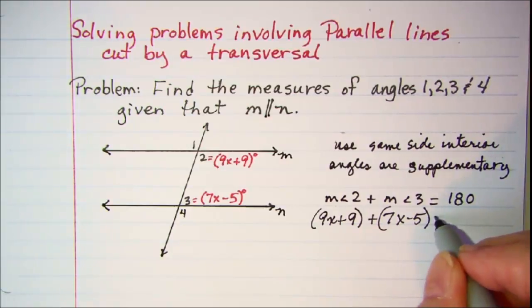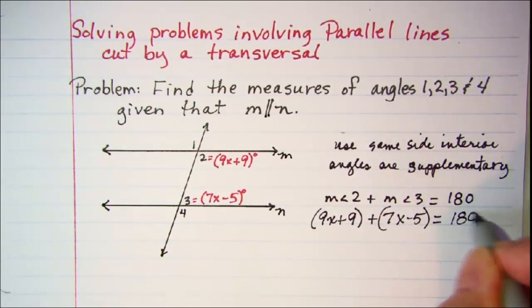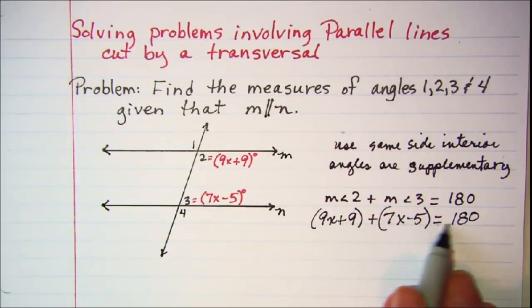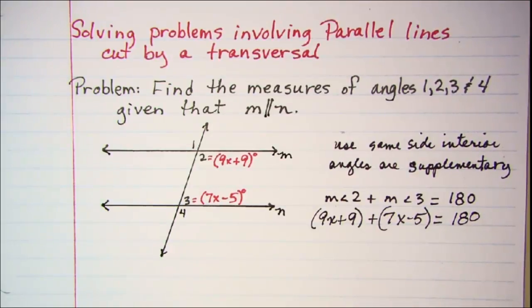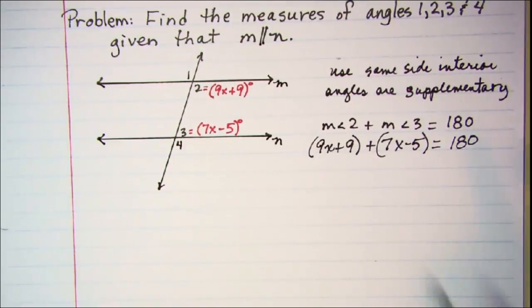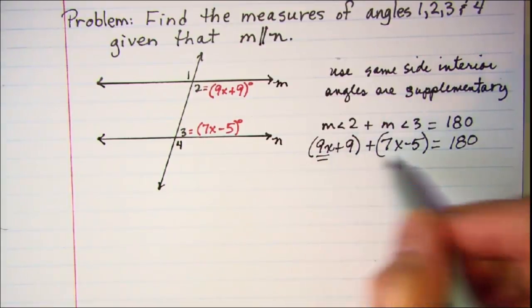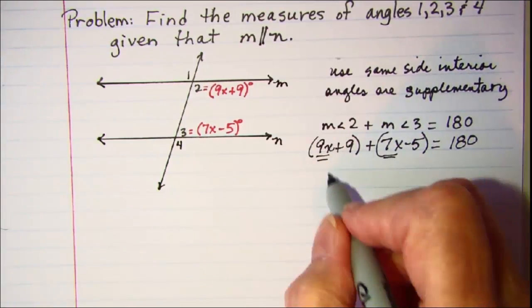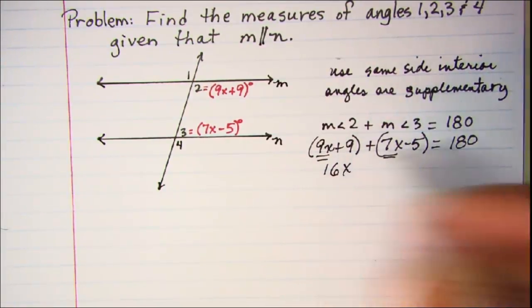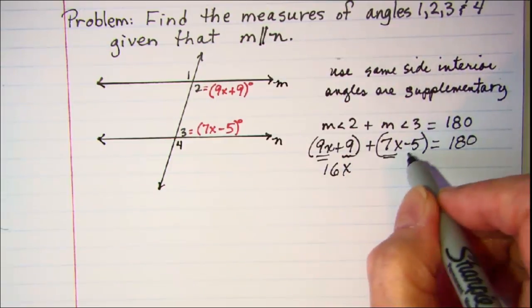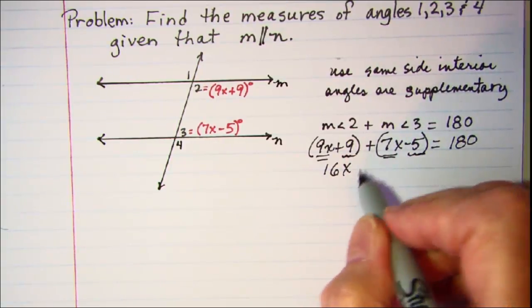And those two added together is 180. So let's go ahead and solve this equation for x. We can combine like terms: 9x and 7x is 16x, and then 9 minus 5 is 4.